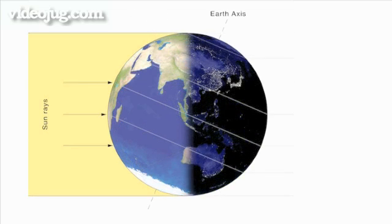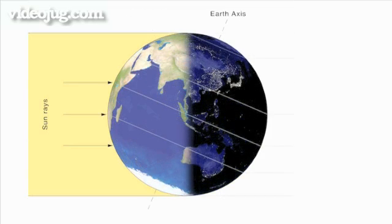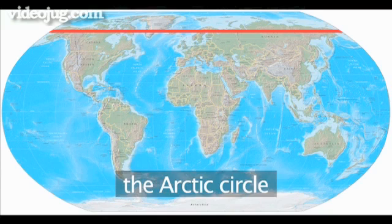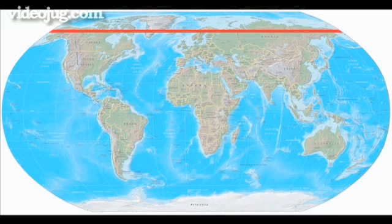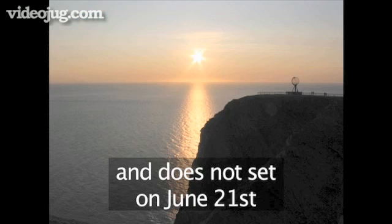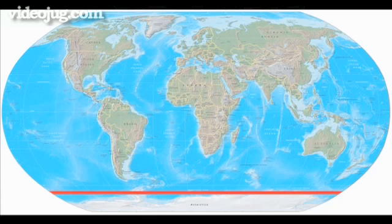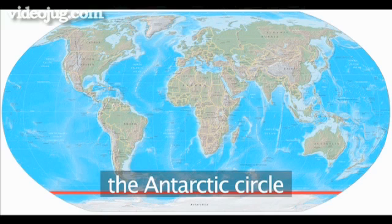It is only above these lines that the seasonal changes are more prevalent. Further north is a line called the Arctic Circle. It is at this line that the sun does not rise on December 21st, the winter solstice, and does not set on June 21st, the summer solstice. The southern hemisphere has the Antarctic Circle, where the opposite is true.